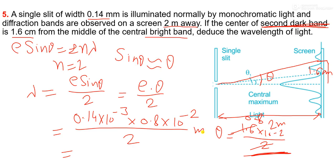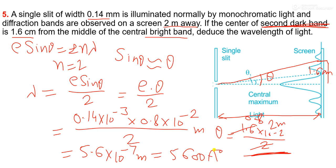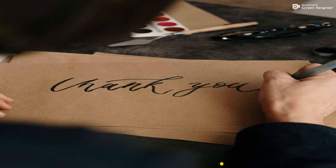After calculation, we get lambda equals 5.6 into 10 to the power minus 7 meters, and in angstrom it becomes 5600 angstrom. Okay, thank you.